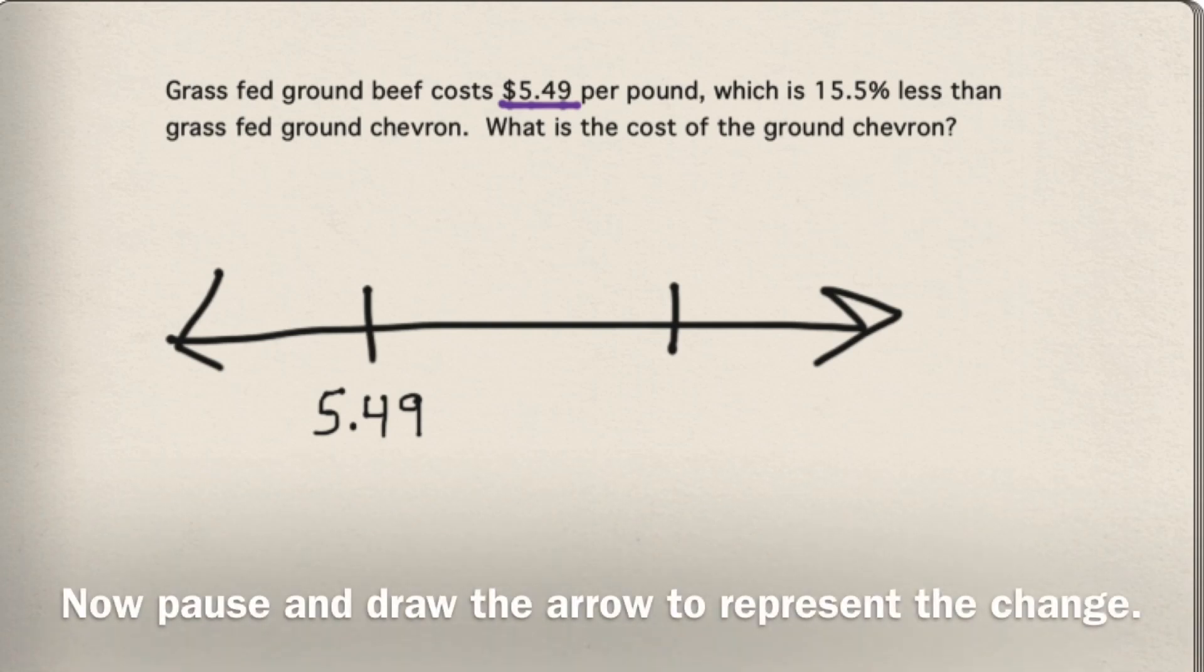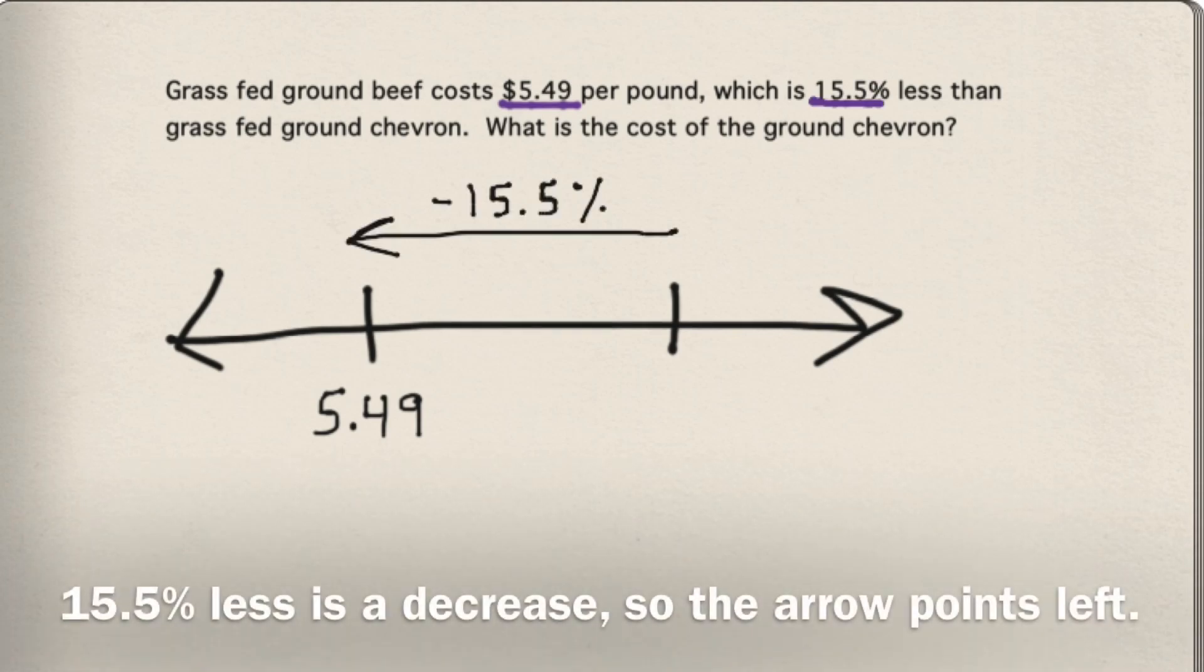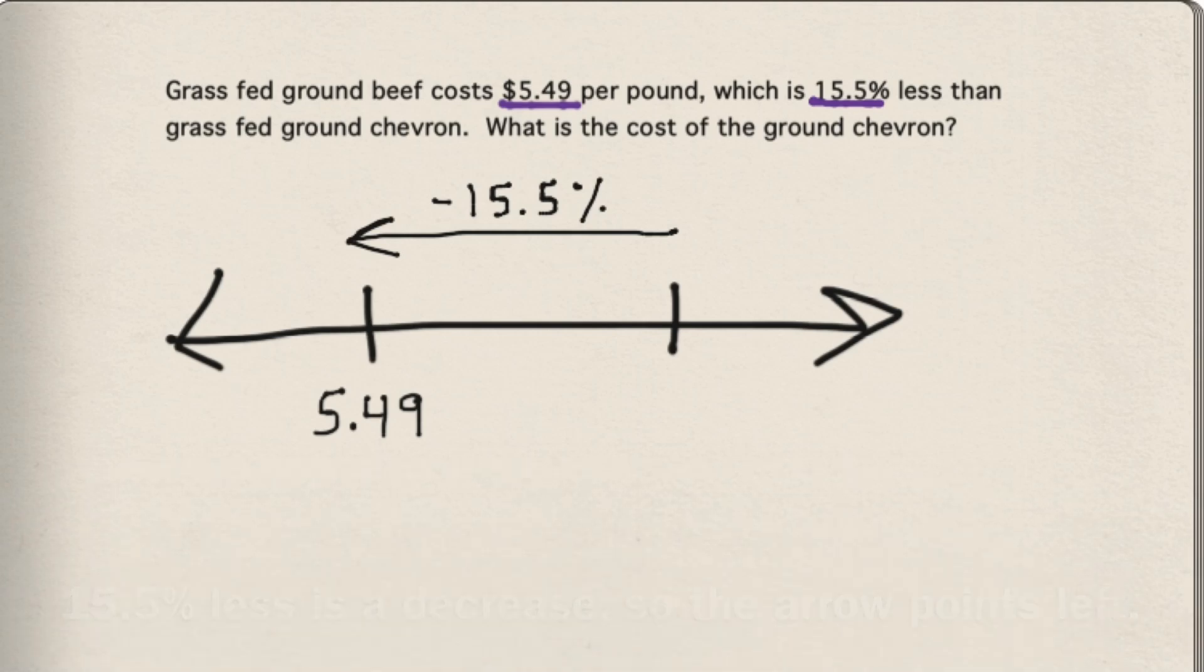Now pause and draw an arrow to represent the change. 15.5% less is a decrease, so the arrow points left.